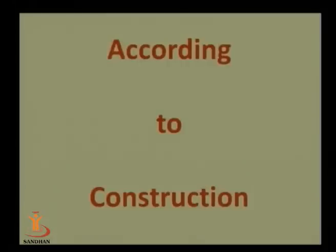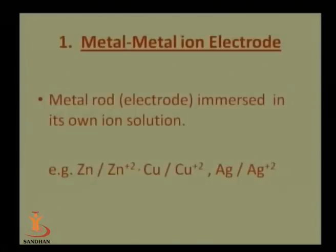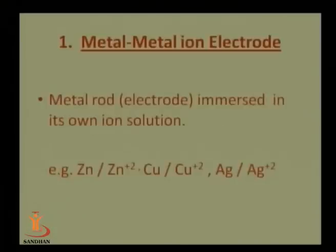The second classification is according to construction. According to construction, a metal electrode is immersed in its own solution — for example, zinc in zinc sulfate, copper in copper sulfate, and silver electrode dipped in silver solution, as used in precipitation titration.